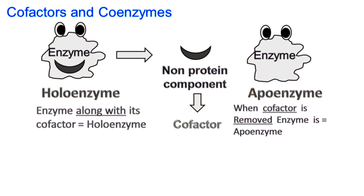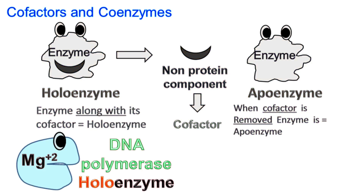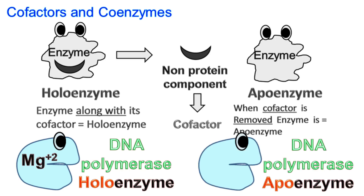For example, DNA polymerase requires magnesium ions for its function. The DNA polymerase along with magnesium ions is called a holoenzyme, while the DNA polymerase without magnesium ions is called an apoenzyme.